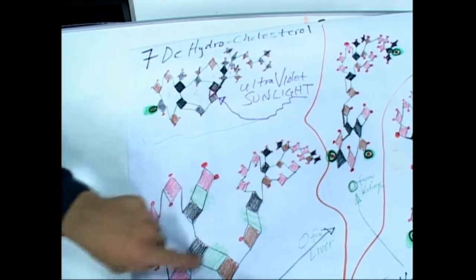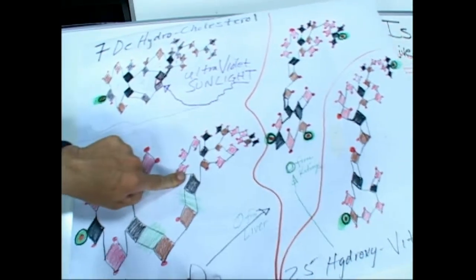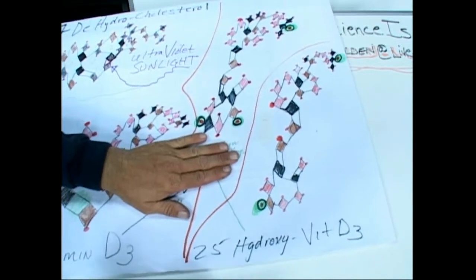UV light hits it, breaks open that middle ring. And it gets an O from the liver, goes to 25-hydroxy vitamin D3.